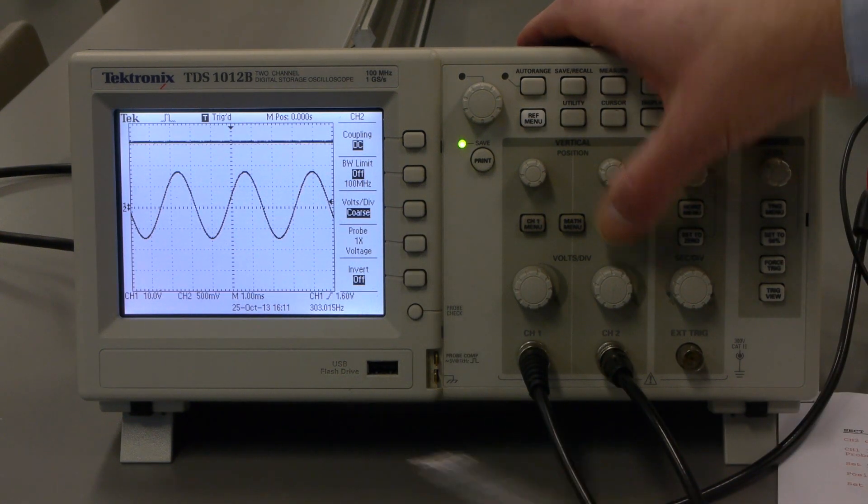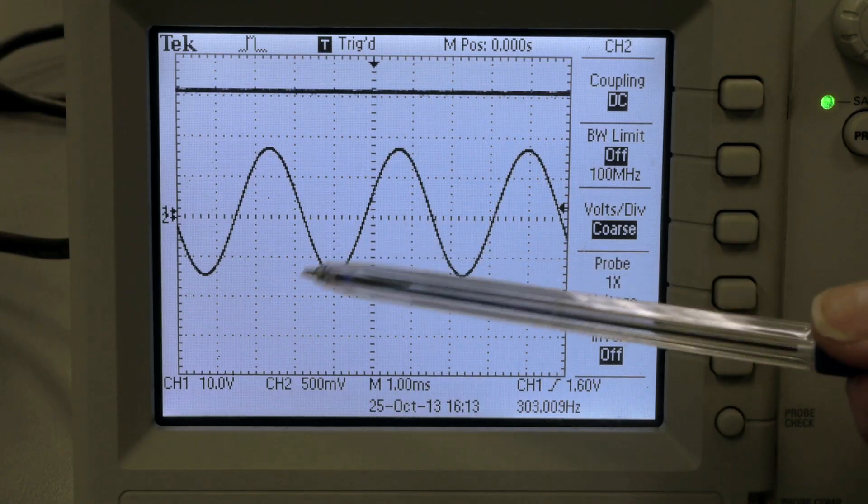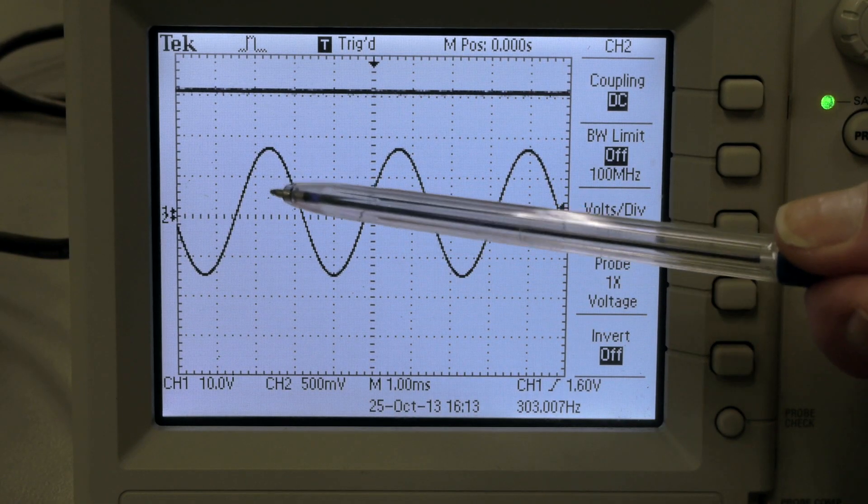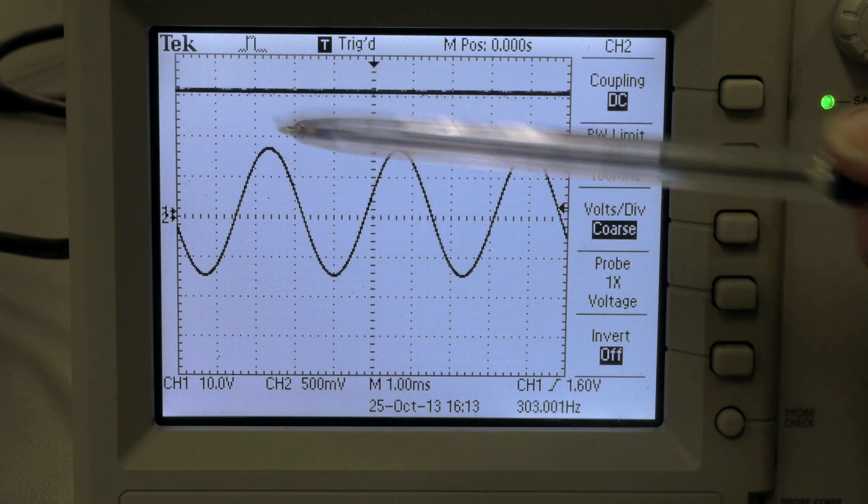Now we can read it as about 15 volts to the peak. Now if I switch on my channel 2 again, briefly just to see it, there's our DC and our AC. Now we can read it as 10 volts per division, which means it's about 15 volts from the zero line to the top here.